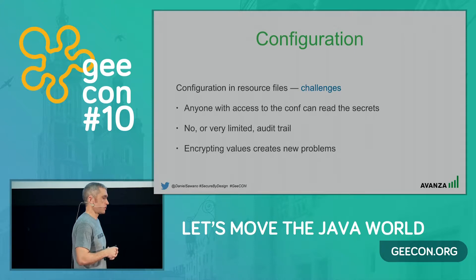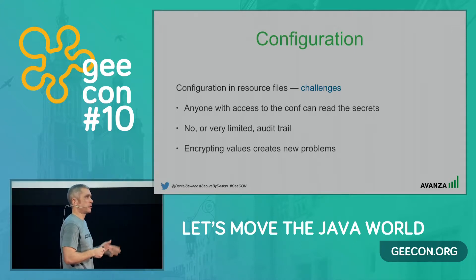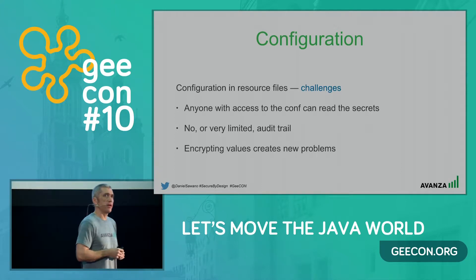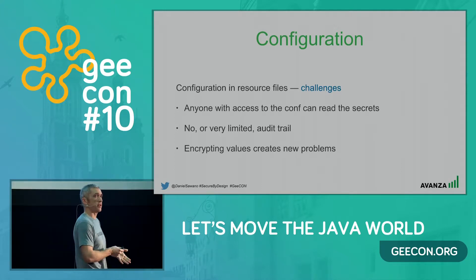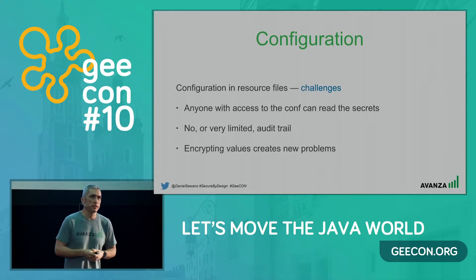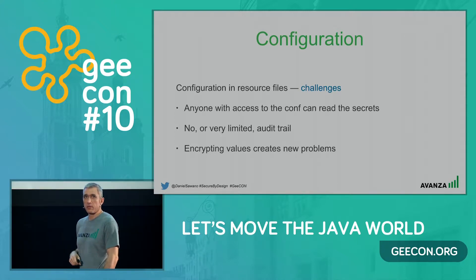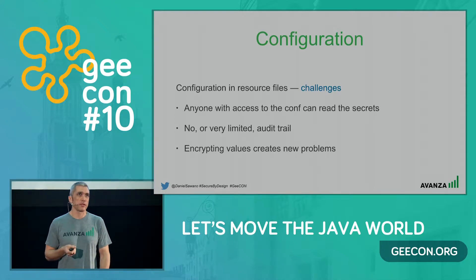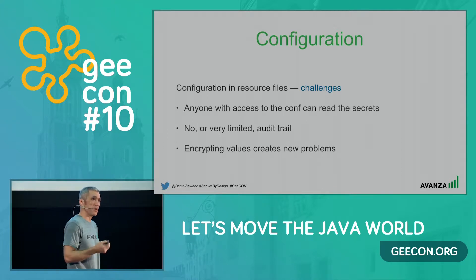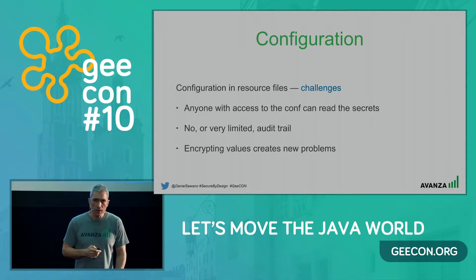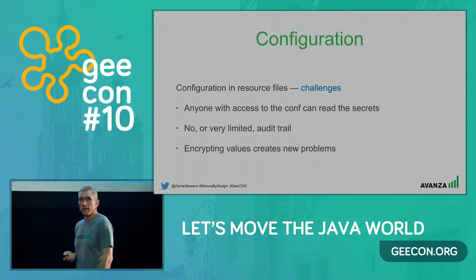Someone might suggest encrypting the sensitive data - the password - and putting the encrypted value in the resource file. It's safe, but then you need some way for the application to decrypt that value, so you need to provide an encryption key to the application. Where do you put the encryption key? Maybe in another file - but then how do you protect that file? It's kind of a chicken-and-egg problem.